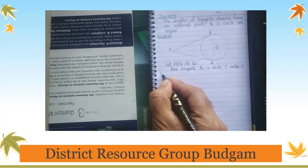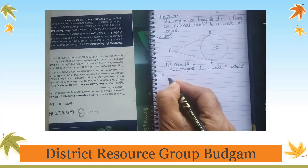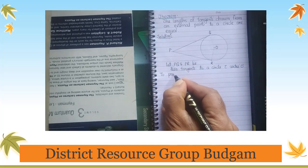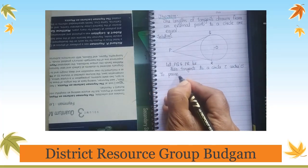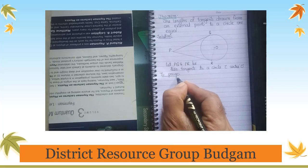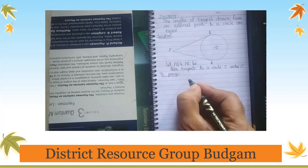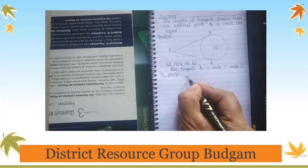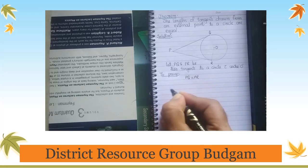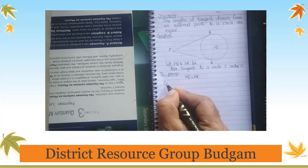To Prove: The length of PQ and PR are equal, that means PQ = PR.